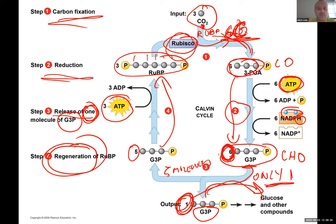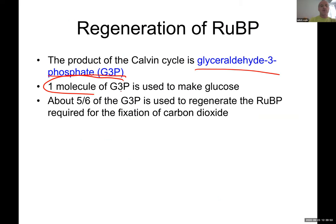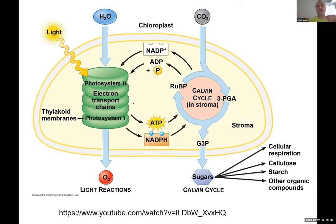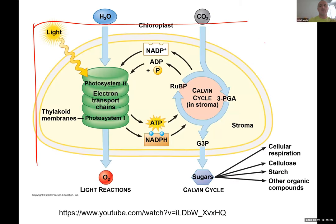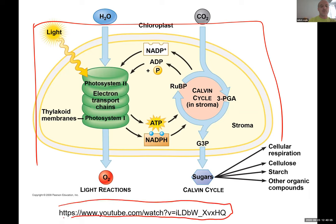If we used all six G3Ps for glucose, the cycle would stop. If we used half of them, plants would produce three times the amount of sugar produced today. So the steps are: carbon fixation, reduction, release of one G3P molecule to turn into glucose, and regeneration of RuBP. One molecule of glyceraldehyde-3-phosphate is assembled to make glucose. That is the photosynthesis breakdown.